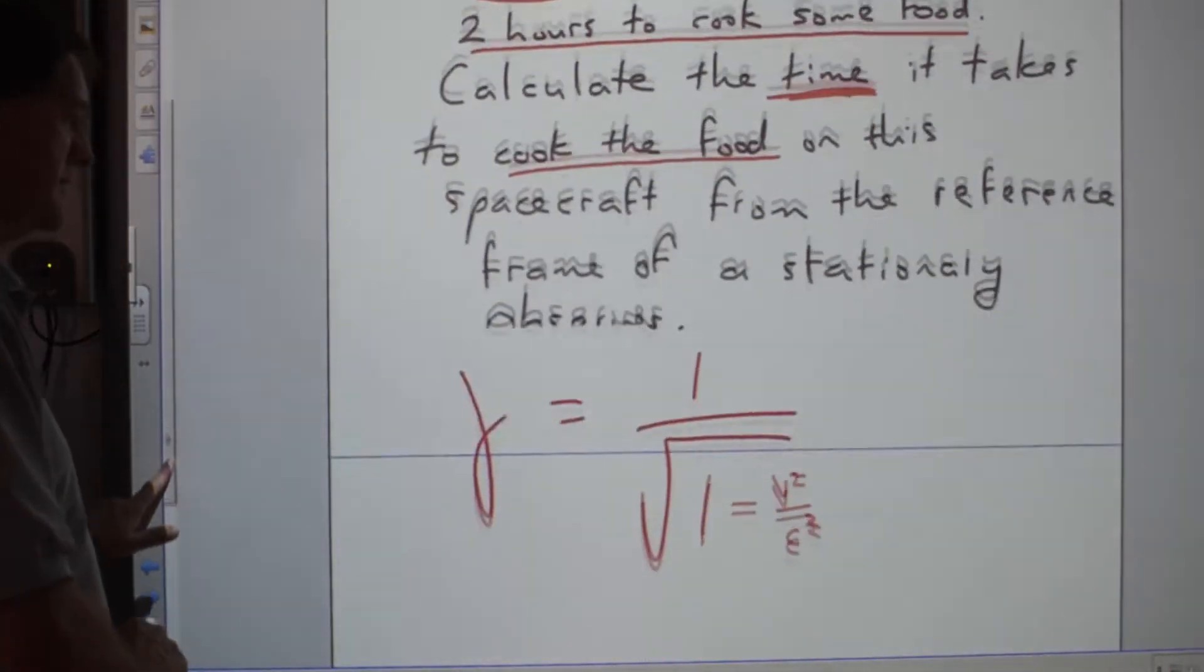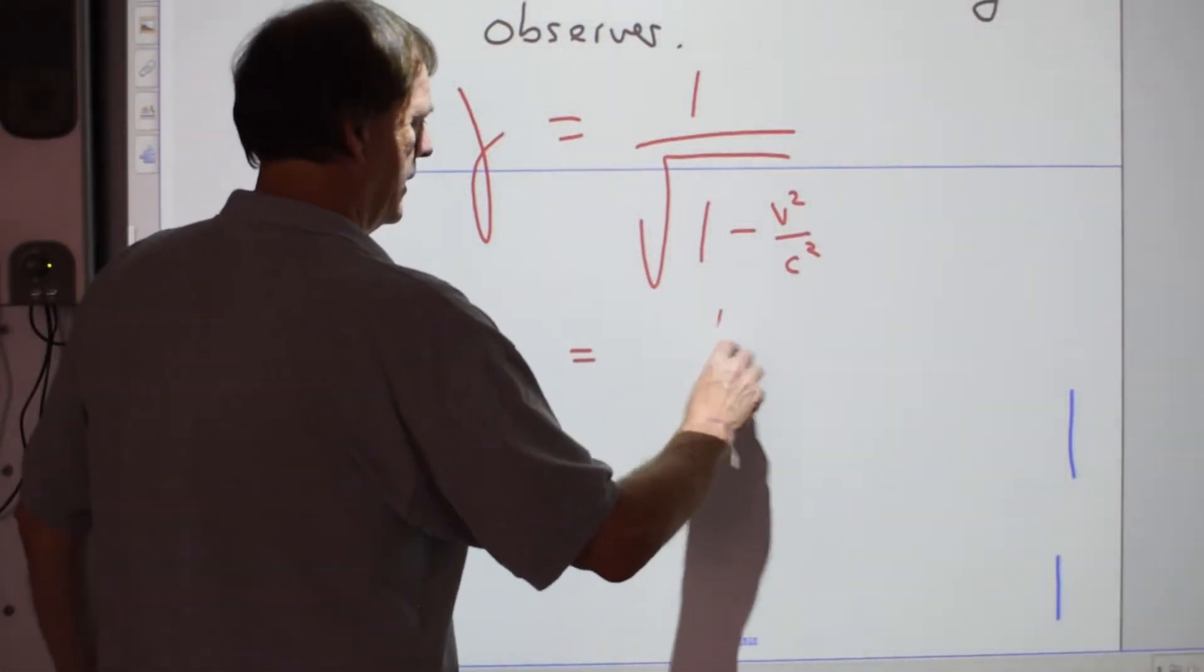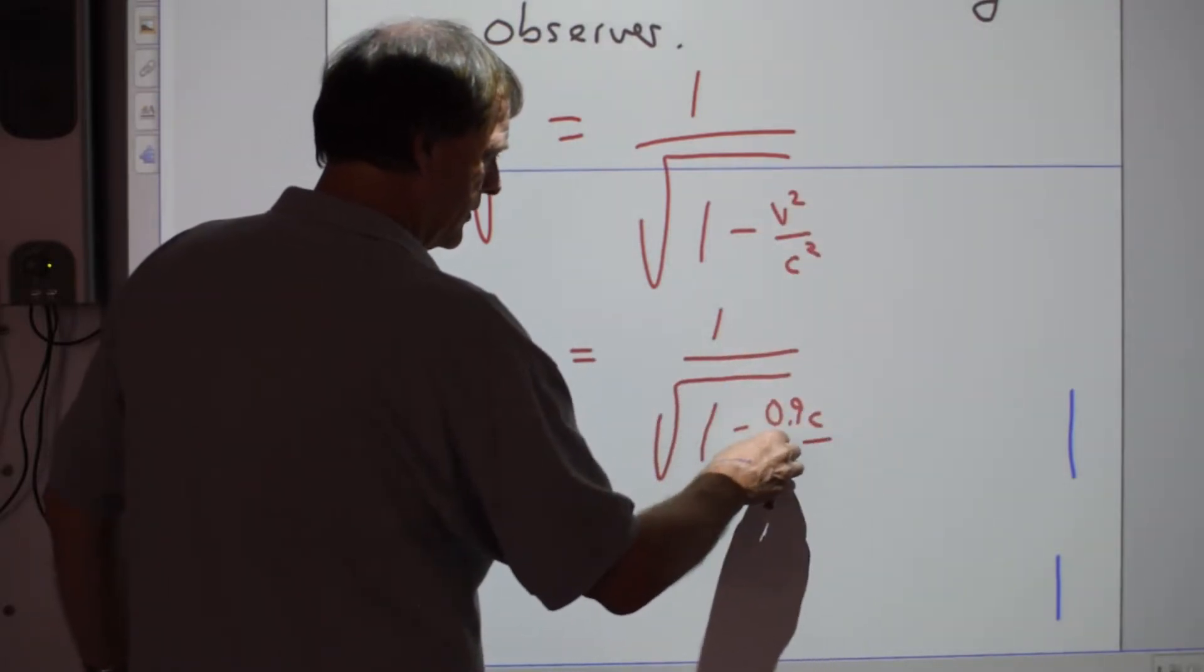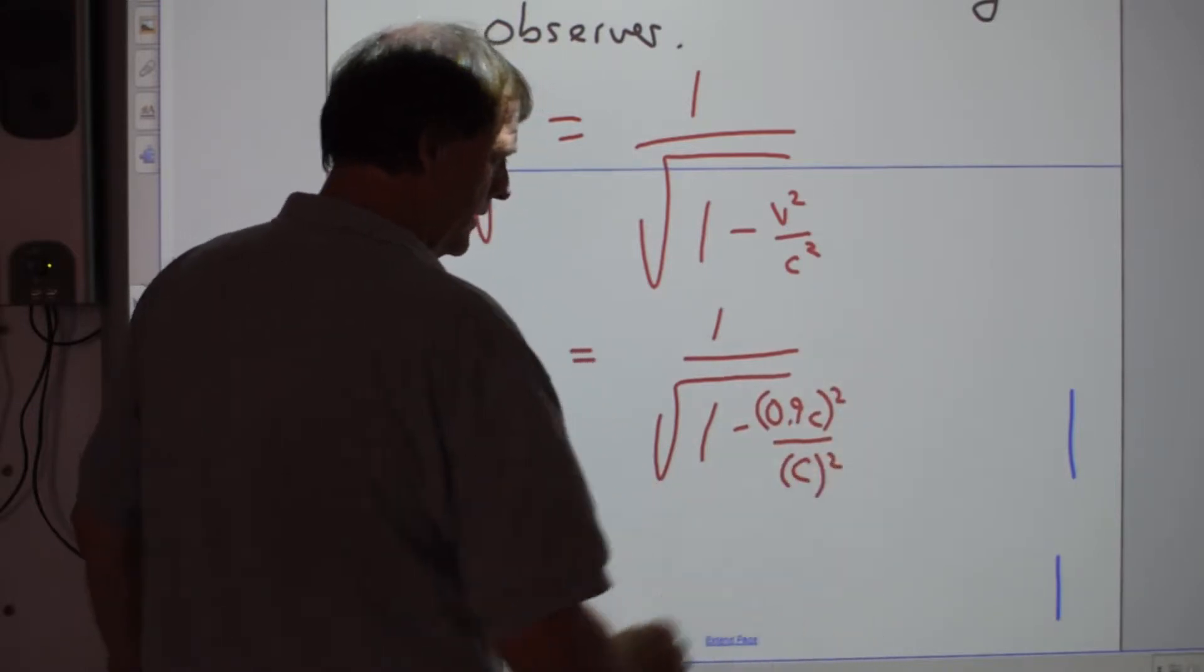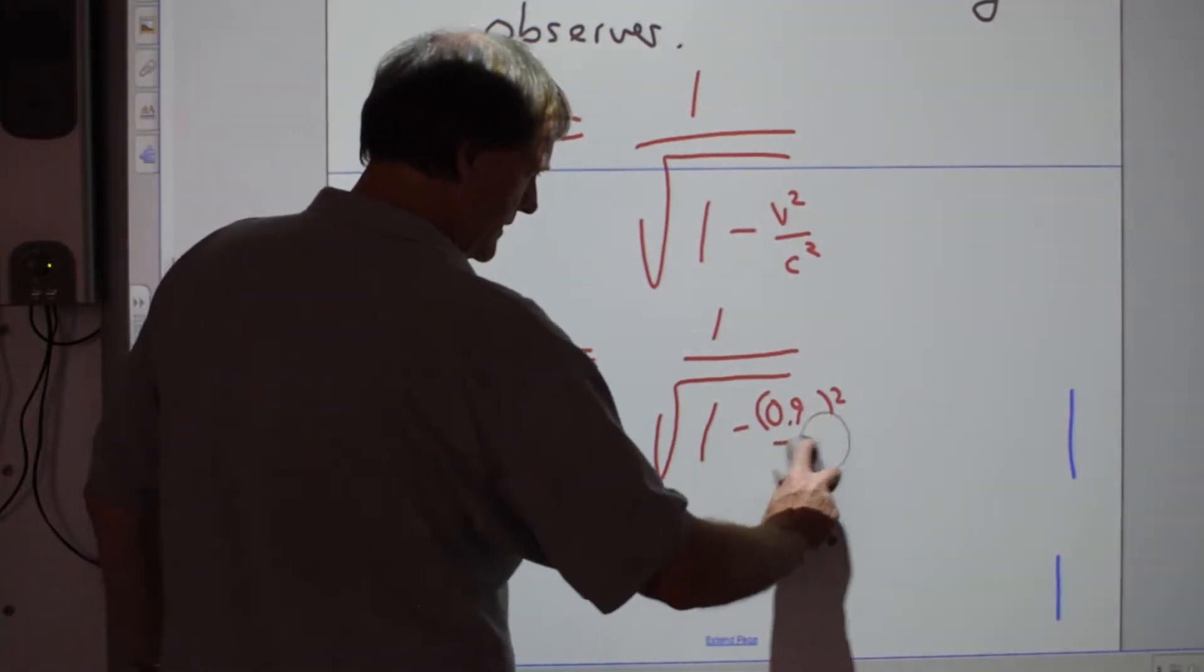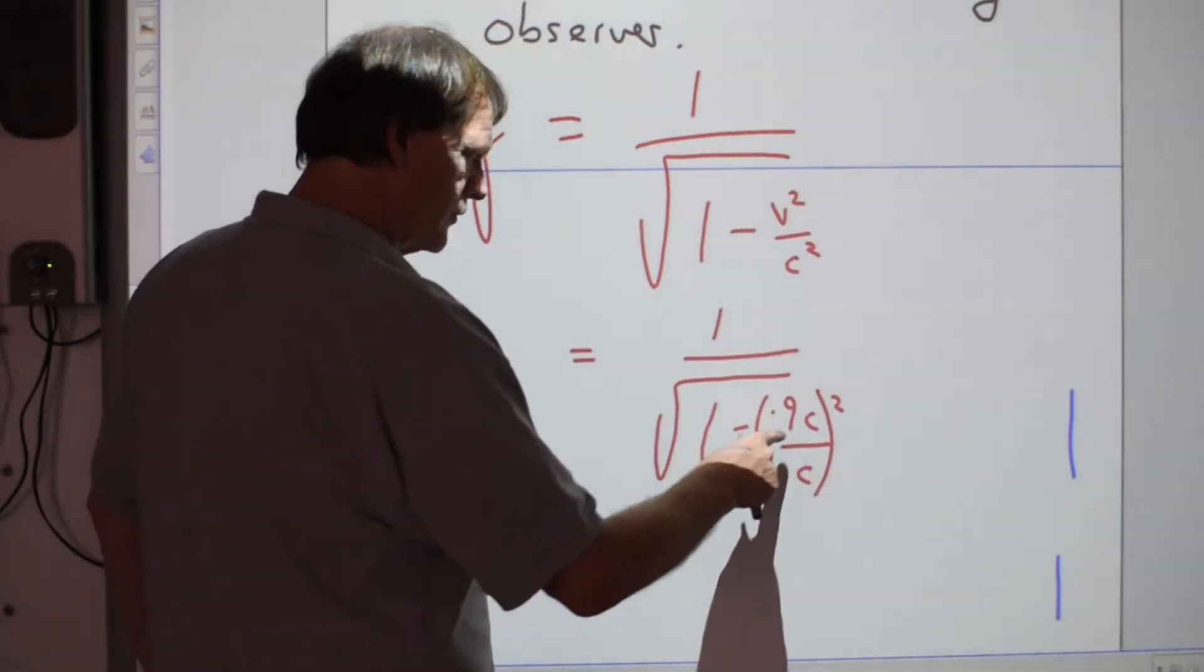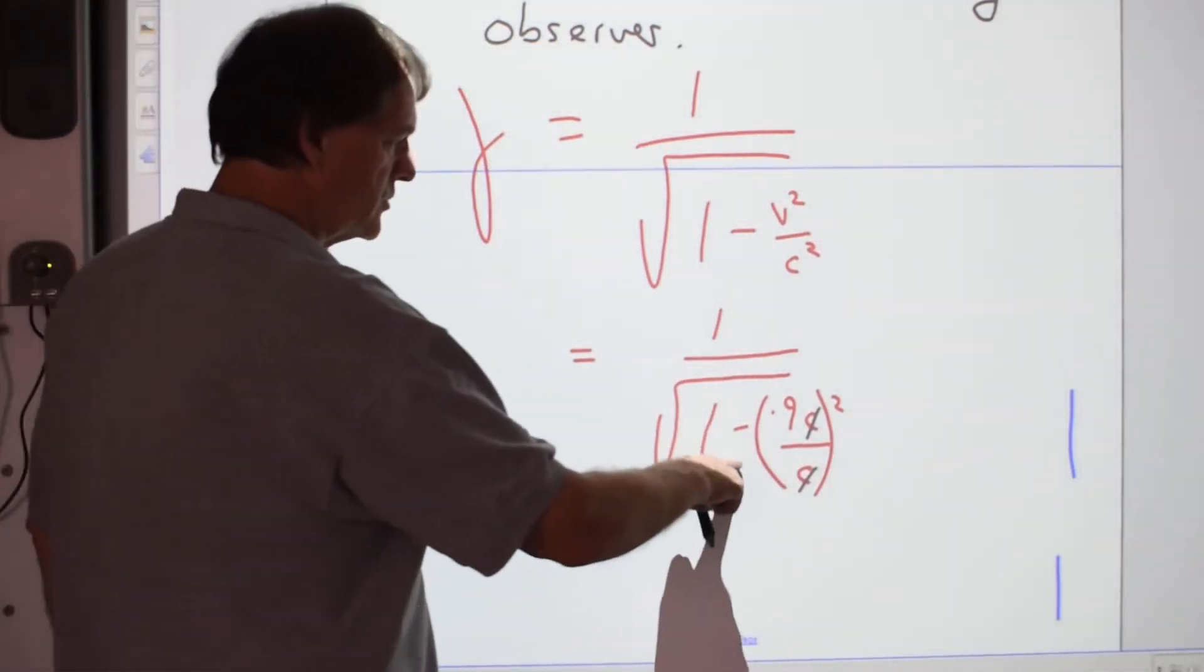You work out your Lorentz factor first. Gamma equals 1 over the square root of 1 minus... gamma is 1 over the square root of 1 minus v squared. V was 0.9 times the speed of light for v, and that's going to go over c. This whole thing was squared for both, like that. What you should be able to see here is the c squared should cancel there. If I take this out as a common factor, get the square outside here, your 0.9c inside and c outside, take the squares out and put it around that. You've got 0.9c over c. The c's can cancel.